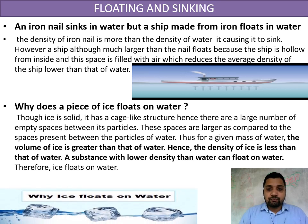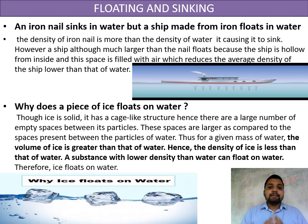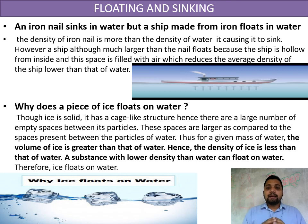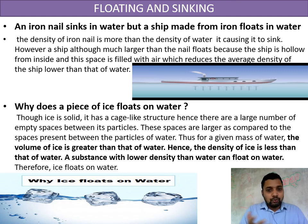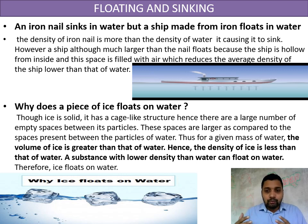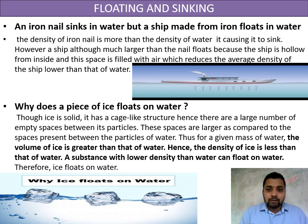Another example: ice floats on water. Water at 4°C has maximum density due to the anomalous expansion of water. The density of ice is less than that of water at 4°C, so ice floats — though part of it remains submerged. Ice floats because its volume is greater and density is less than that of water.